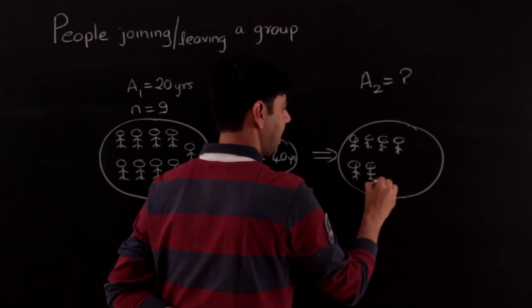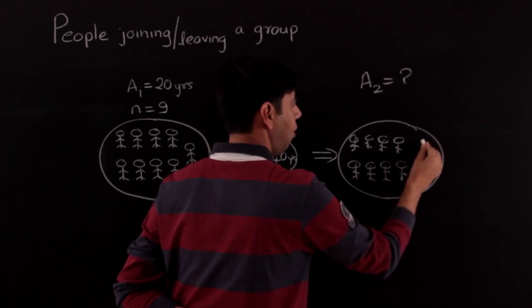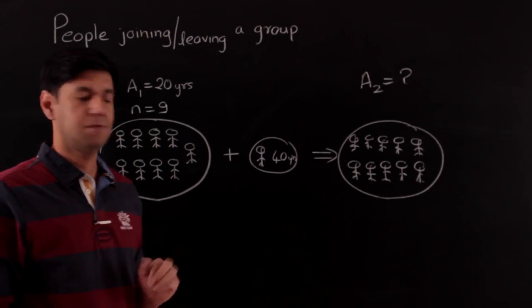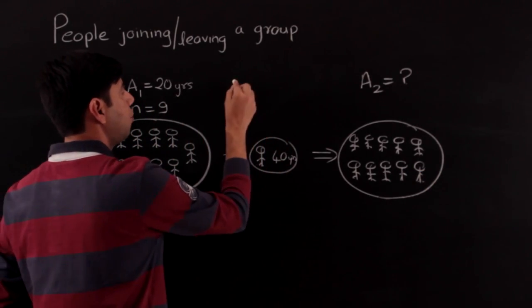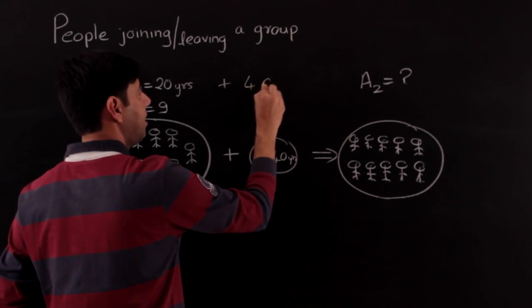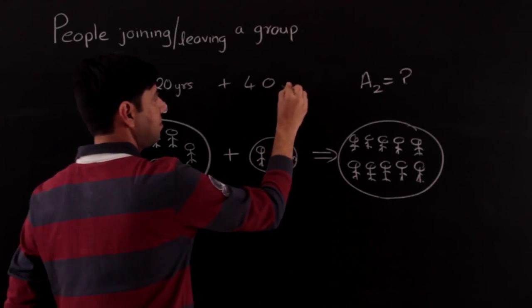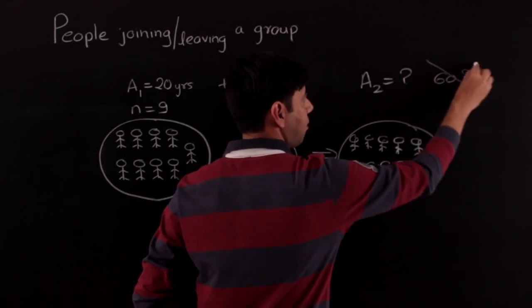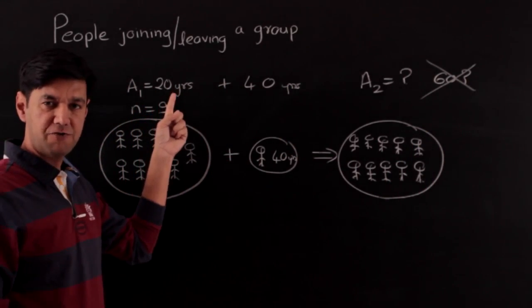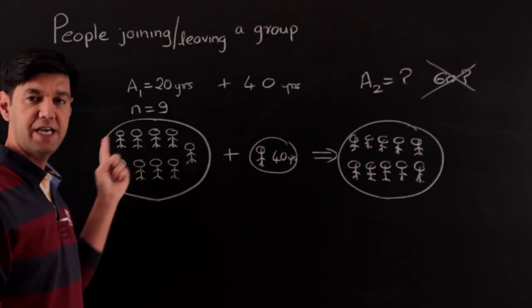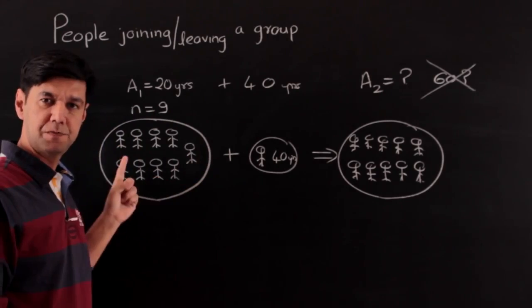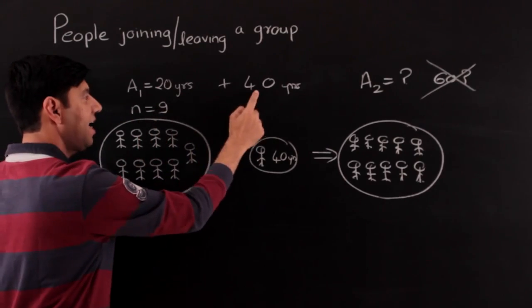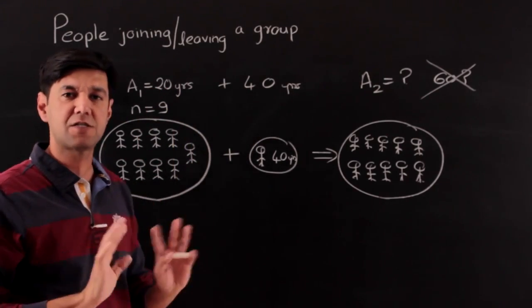There were originally 9 people, now one more has joined so there are 10 people. Can I add 40 years to 20 years and say the average is 60 years? This would be wrong — there is not one individual of 20 and another of 40. The 20 refers to a group of 9 people; adding 40 to an individual 20 makes no sense.